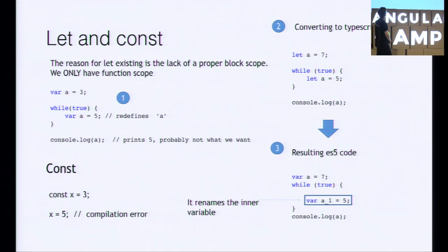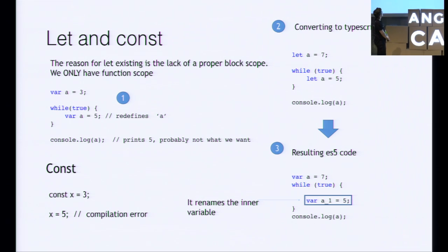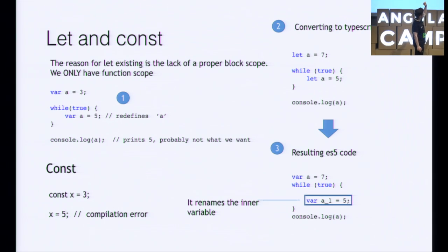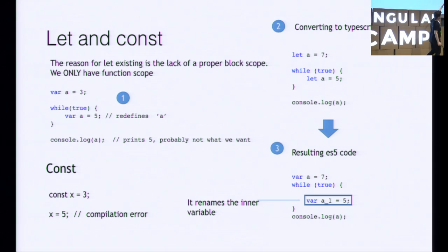Another very cool construct is let and const. Let's first talk about let and the problem it solves. Looking at the top left, we declare var a equals three, we have a while loop, and we declare another var a inside. When we console log it, it prints five — because in JavaScript, the only time a variable is scoped is within a method, not within a while construct. We fix that by using let instead. With let a equals seven and let a equals five inside the while loop, console logging gives us seven. TypeScript transpiles this into ES5 by creating another variable for the inner scope. So let solves the problem of scoping.